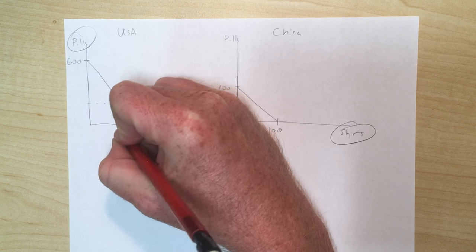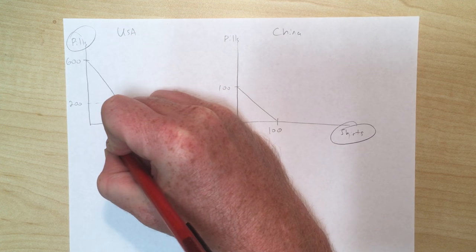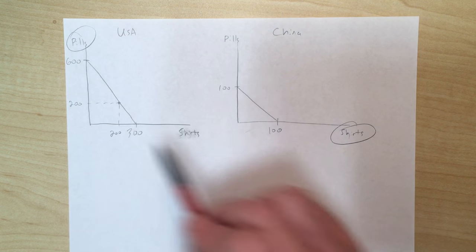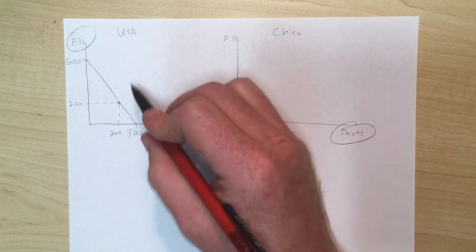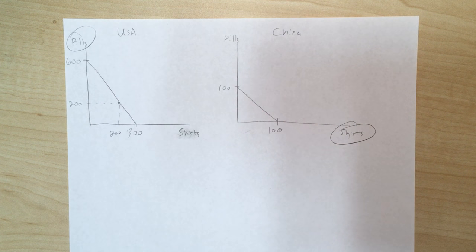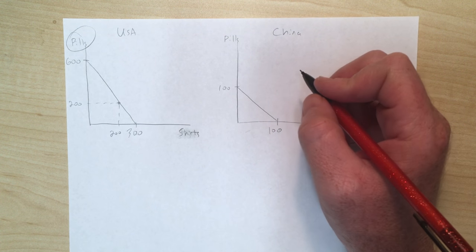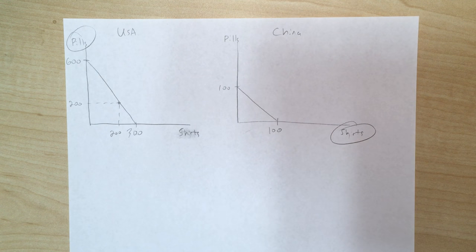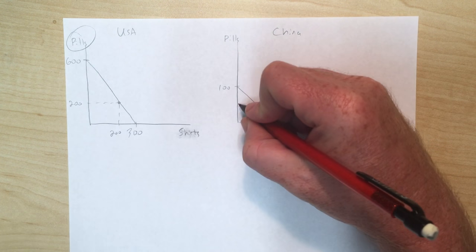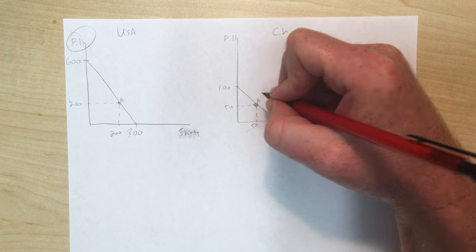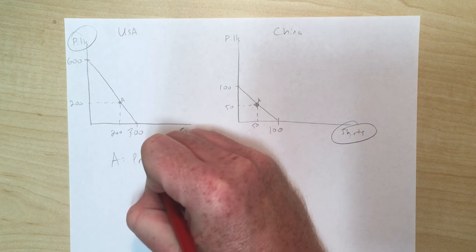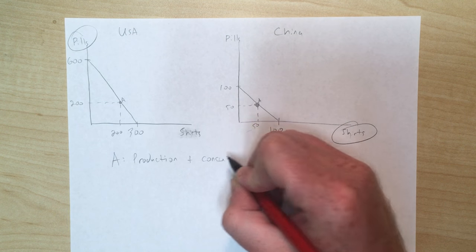In other words, if the US wants to produce a shirt it has to give up two pills; if China wants to produce a shirt it only gives up one pill — that's where the comparative advantage comes from. Let's label point A like we did last time. The numbers on this graph come from me playing with the numbers; students won't be responsible for choosing specific bundles. Let's say the US produces 200 of each — that is on the production possibilities frontier — and China produces 50 pills and 50 shirts. Label that point A.